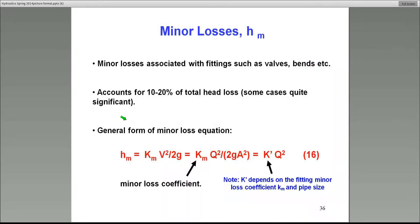Minor losses. These are due to fittings and pipes normally. And most of those fittings, the head loss can be associated with those fittings, can be expressed in this form. K_m, V squared over 2g, where V squared over 2g is the velocity head. K_m is basically the minor loss coefficient.